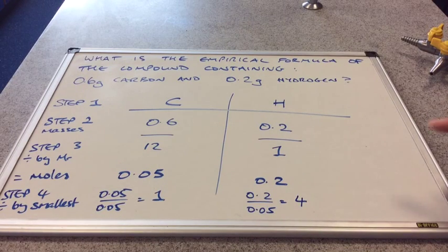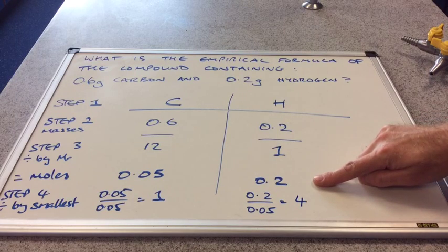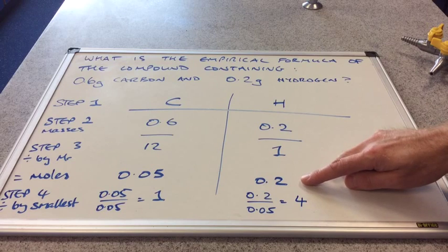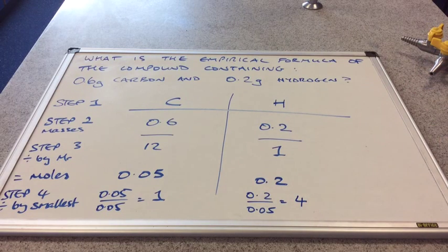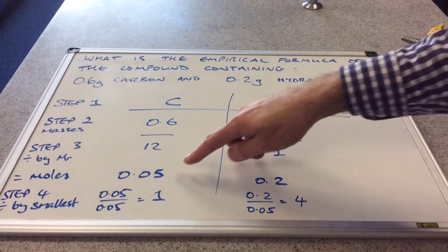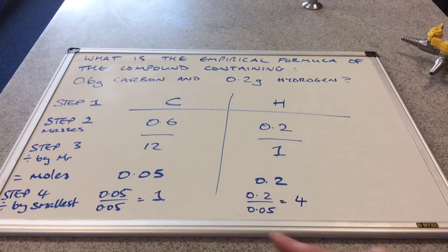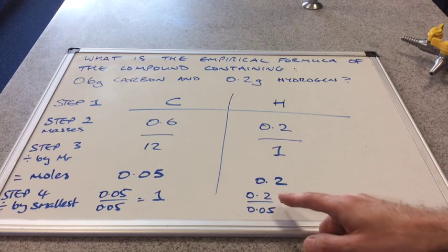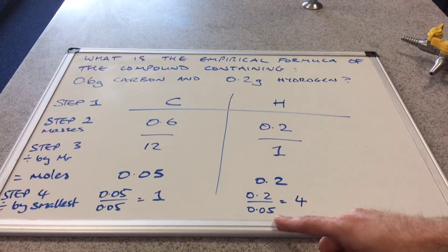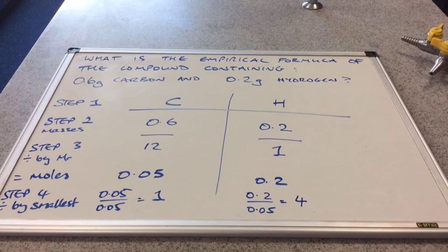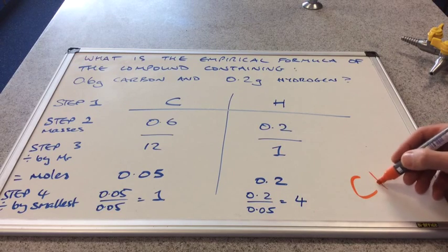So before we go on to step four, if we just think about what this line is telling us, it's telling us that for every 0.05 moles of carbon, there are 0.2 moles of hydrogen. But remember, empirical formula is the simplest whole number ratio of each of the atoms in the compound. So what we do next in step four is we divide both of these numbers by the smallest one. Obviously 0.05 is the smallest of these two, and that's going to give us one here. And then if we divide the 0.2 by the 0.05, the smallest, we get four. So you can see now we've got a simple whole number ratio of one to four. So what that means is the empirical formula for this compound is CH4.